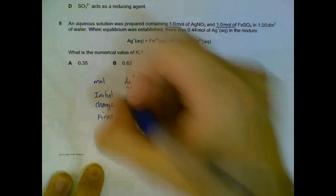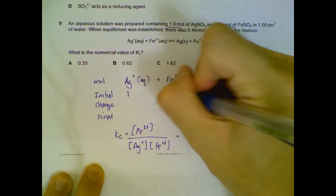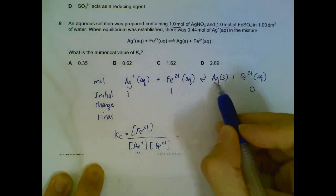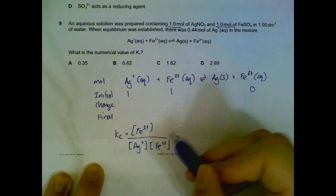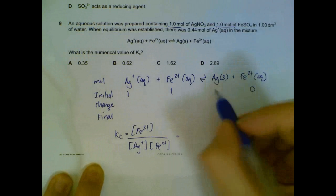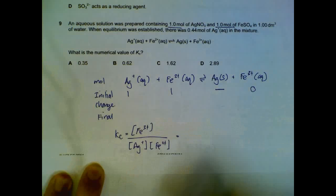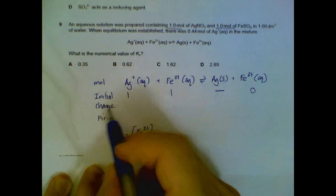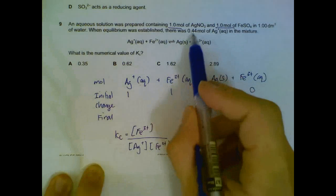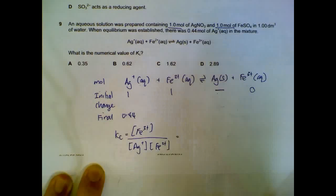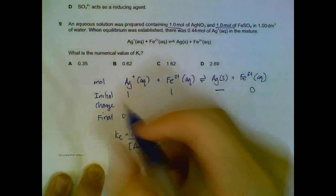We have one mole of iron(II+) initially, and nothing is formed here. Importantly, silver is a solid, so its concentration is fixed and will not be reflected in the Kc expression. We do not need to put a number for silver.